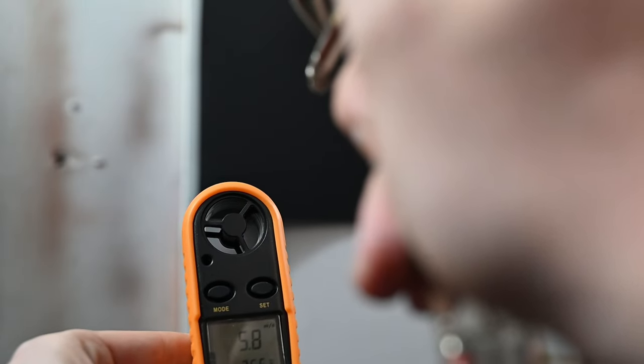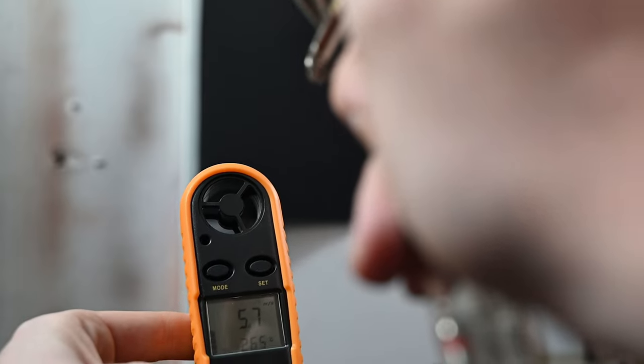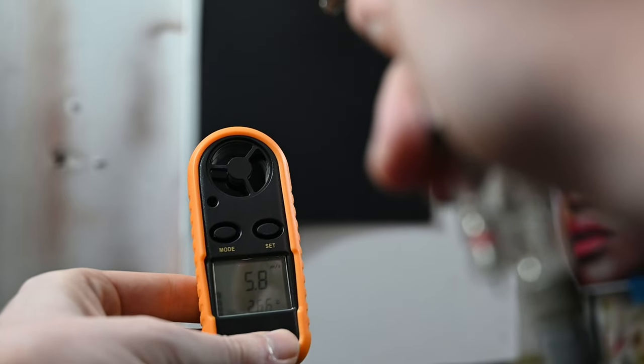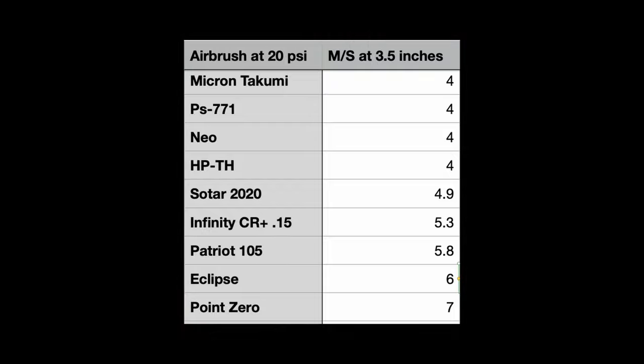Spraying through the atomometer at 20 PSI at three and a half inches away I get a spray angle of around 5.8 meters per second. This is basically what I'd expect from a general use airbrush like this one. Again it's similar to the Iwata Eclipse and it's just going to help you spray those thicker paints.